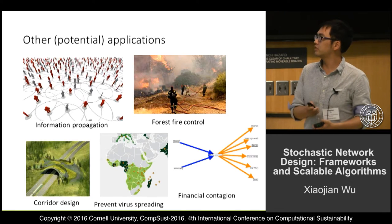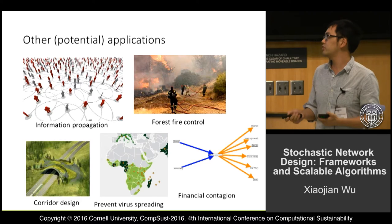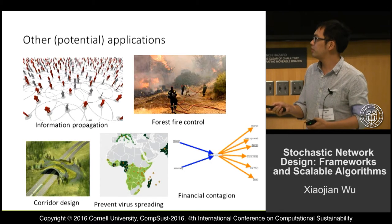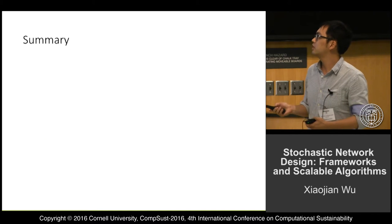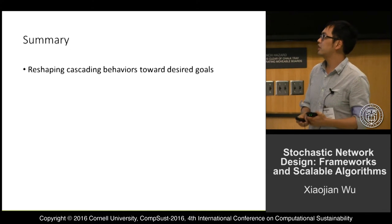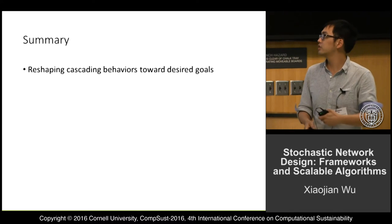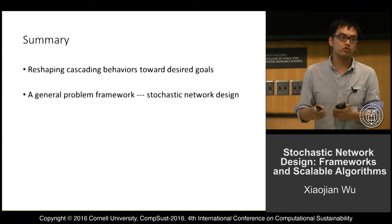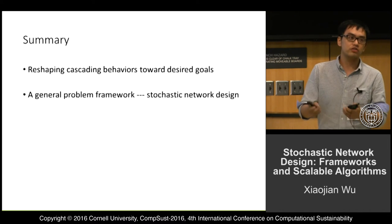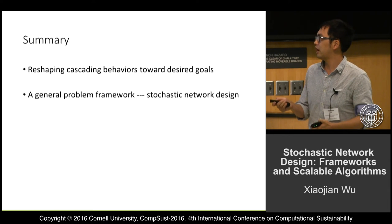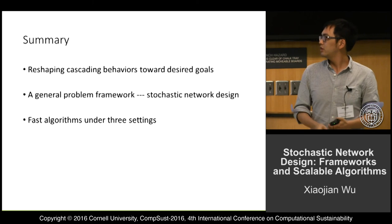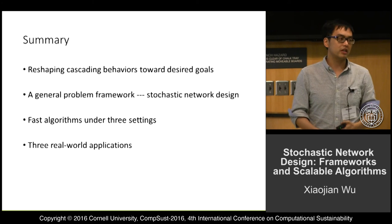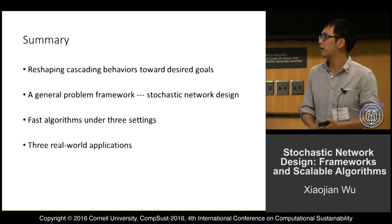Since my algorithm is defined in a general context, it can potentially be applied to other problems with similar properties — for example, influence maximization problems, corridor design, or various control problems. To summarize: we study the problem of reshaping cascading behaviors towards certain desired goals. We define a general framework called Stochastic Network Design, develop three algorithms under three different settings, and apply them to three real-world problems. The results show our algorithms are very fast and produce high-quality solutions.